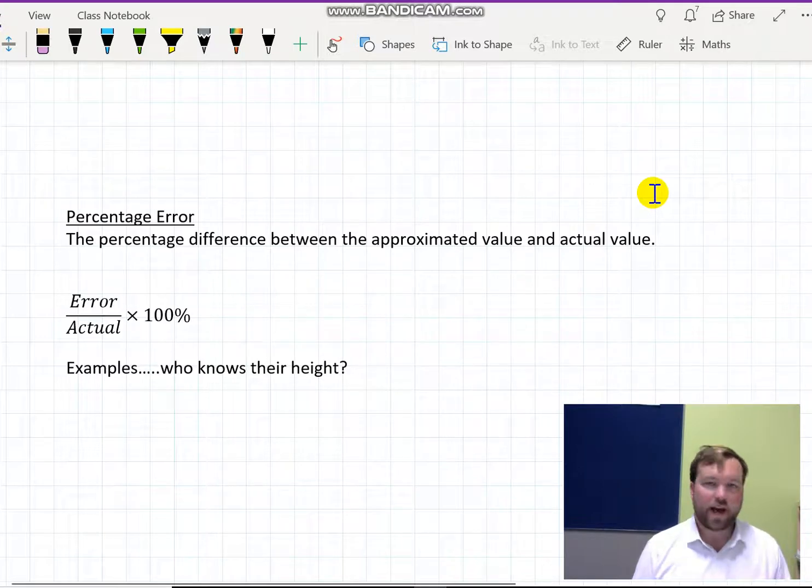So if you want to say how far out someone's calculation was, you could say it's, say, 3 centimeters out. But that doesn't give you a huge idea of how right or wrong they are.